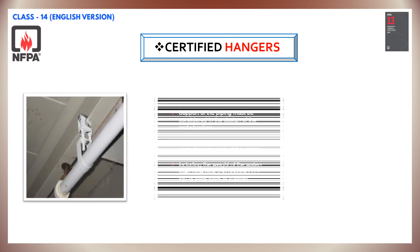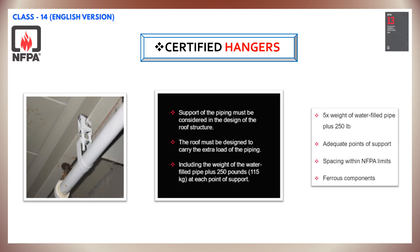Hangers shall be designed to support 5 times the weight of the water-filled pipe plus 250 pounds at each point of piping support. These points of support shall be adequate to support the system. The spacing between hangers shall not exceed the value given for the type of pipe as indicated in NFPA 13. Hanger components shall be ferrous type. Detailed calculations shall be submitted when required by the reviewing authority, showing stresses developed in hangers, piping and fittings, and safety factors allowed.